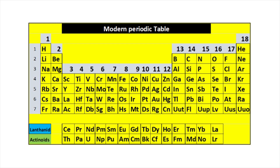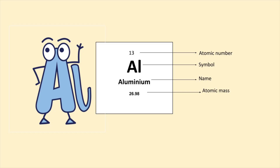Welcome to Aurora Chemistry for Everyone. Let us see how to find the valency of aluminium. Valency is the combining capacity of an element. To know valency, we should know the atomic number. The atomic number of aluminium is 13.